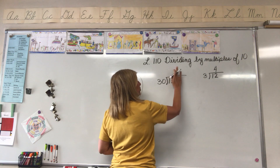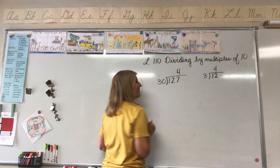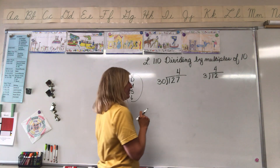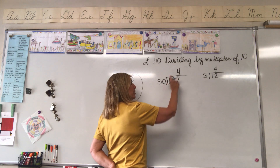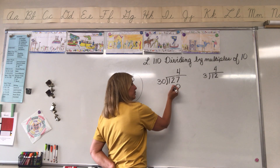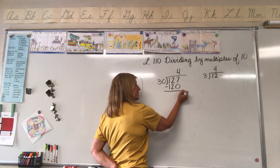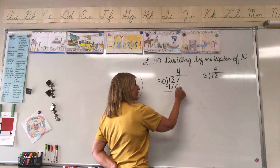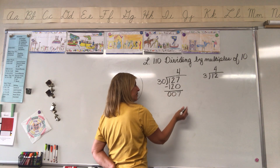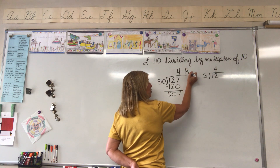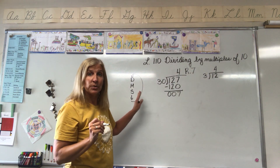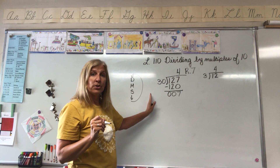I just made a mistake — I wrote my four in the wrong place, the same mistake I cautioned you from making! There are four thirties in 127, so the four goes in the correct position. Now multiply: four times zero equals zero; four times three equals twelve. Subtract: seven minus zero equals seven; two minus two equals zero; one minus one equals zero. Nothing to bring down, so we have a remainder of seven.